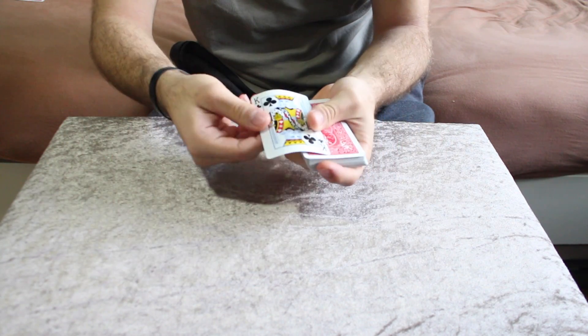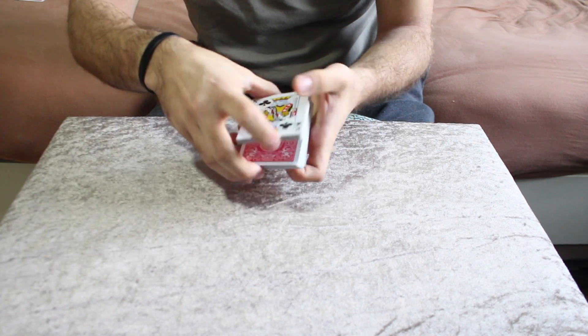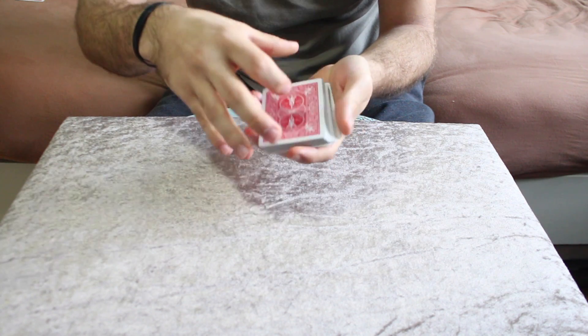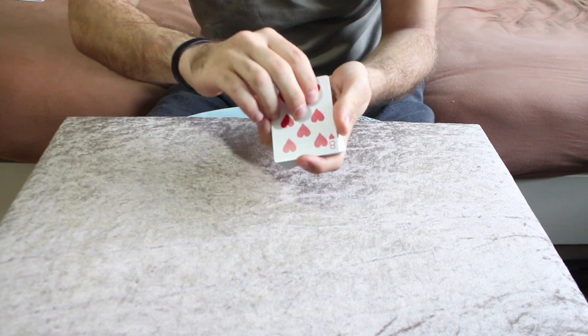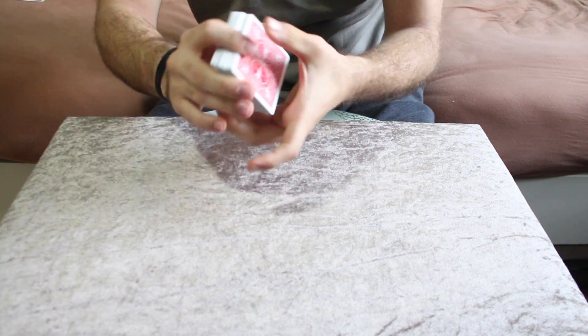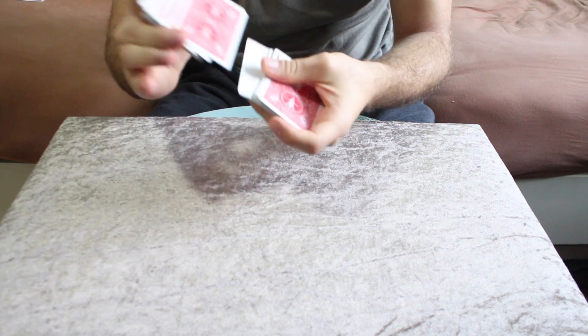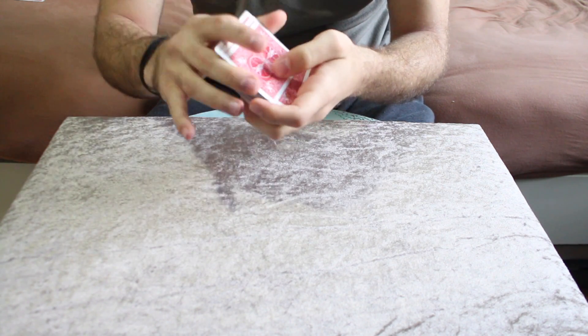If the spectator wants to, the card can be signed of course. In this case we will just leave it the way it is and once it has been remembered it will just go into the center of the pack and can even be shuffled by the spectator, as many times as he or she desires.